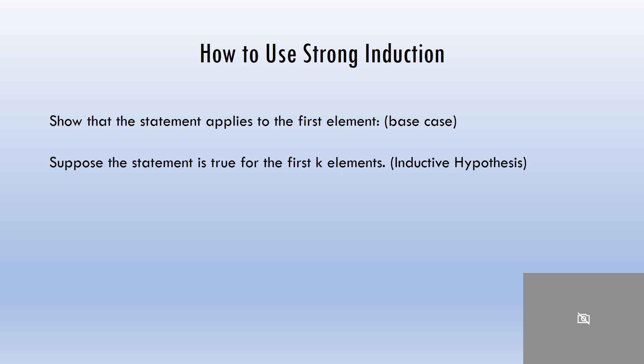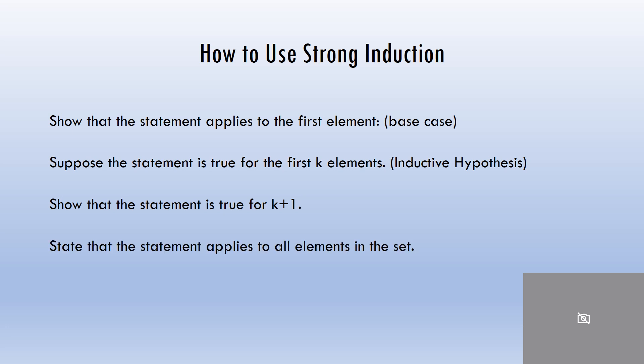The next thing we do is we suppose that the statement is true for the first k elements, and that's our inductive hypothesis. After that, we try to use the inductive hypothesis to show that the statement is true for the next element, k plus 1. This is the three-step process in using strong induction, and the last thing you do is just state that the statement applies to all the elements in the set.